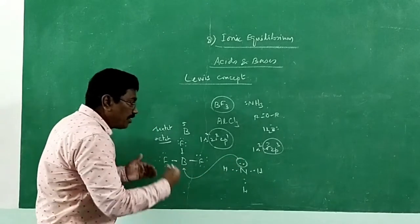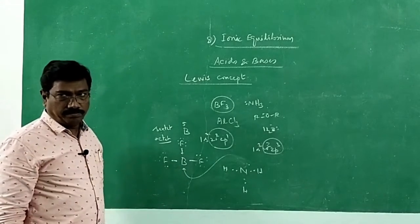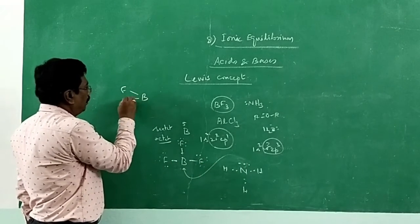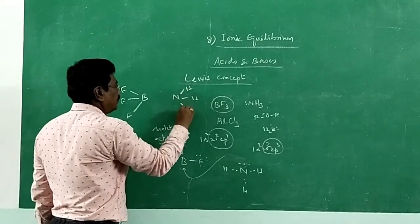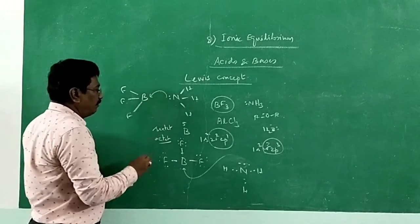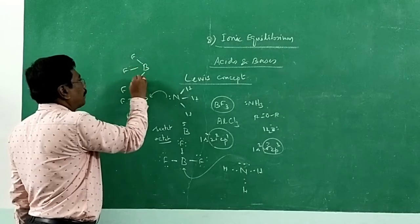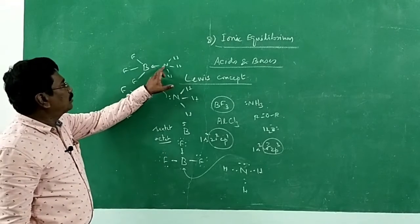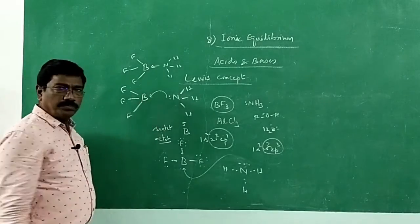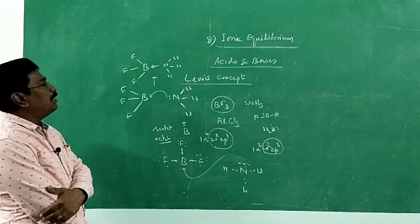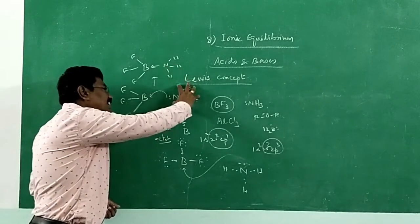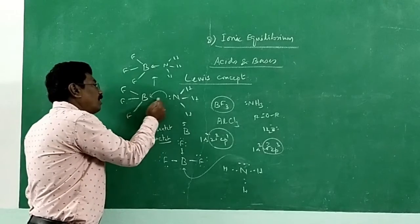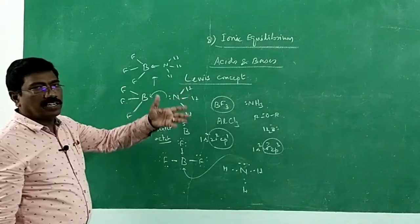Since boron needs an electron pair, ammonia donates its lone pair to boron for the formation of a bond. But it cannot donate completely — the electron pairs are shared between nitrogen and boron. BF₃ has the lone pair donated to boron for the formation of a coordination bond. A coordinate covalent bond is denoted by an arrow — arrowhead towards the acceptor, tail towards the donor. Electron pair comes from nitrogen to boron and is shared between the two.